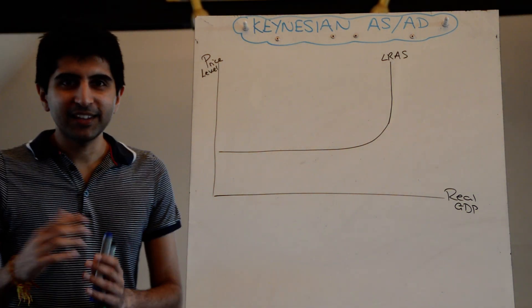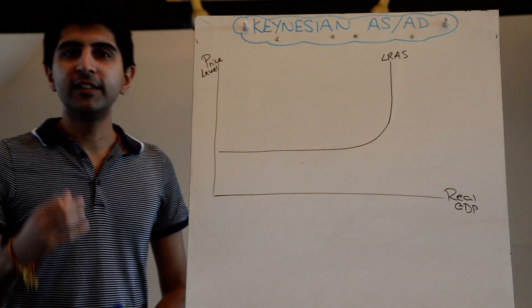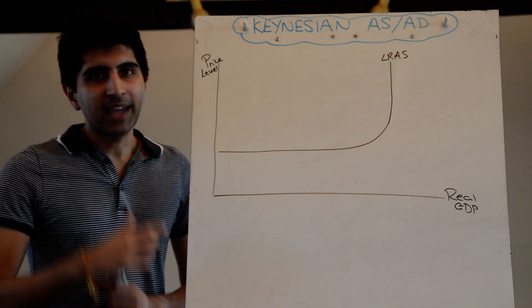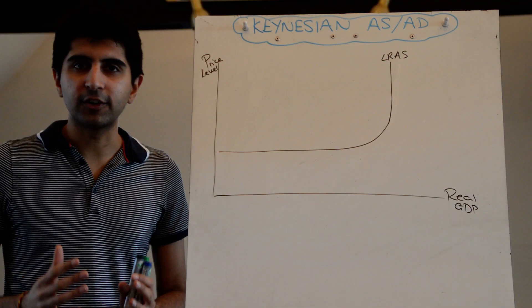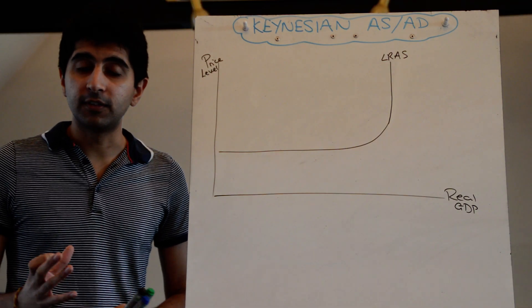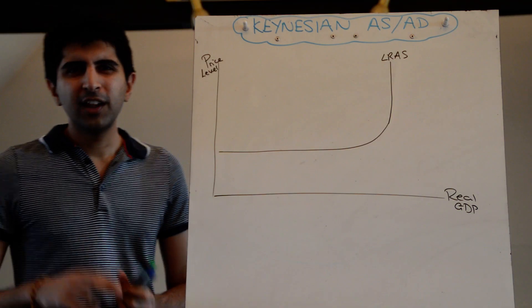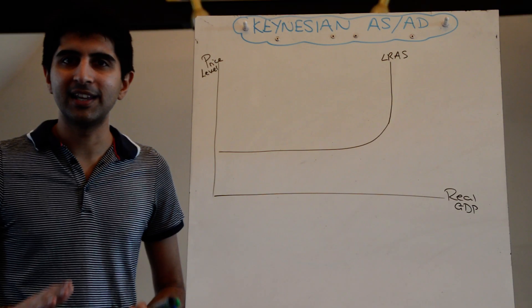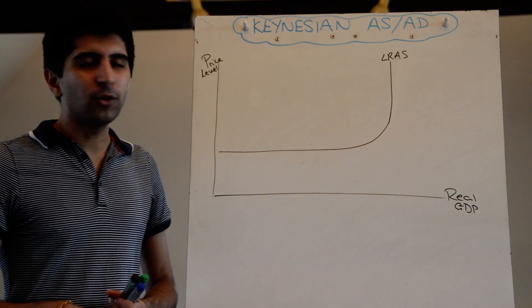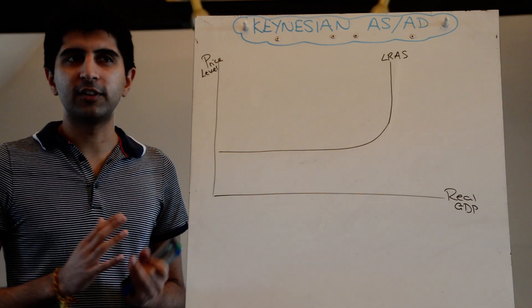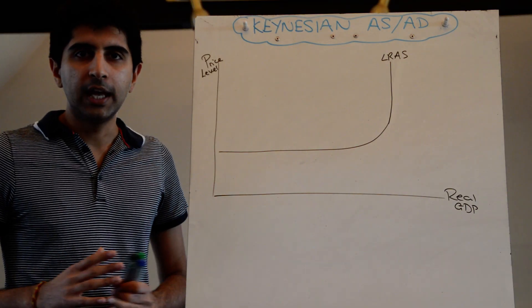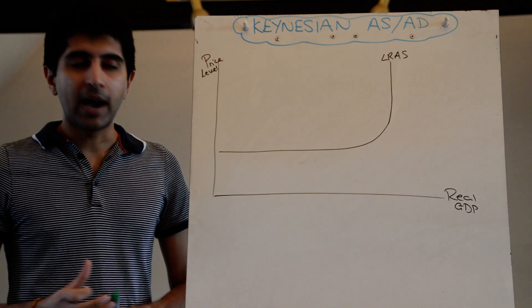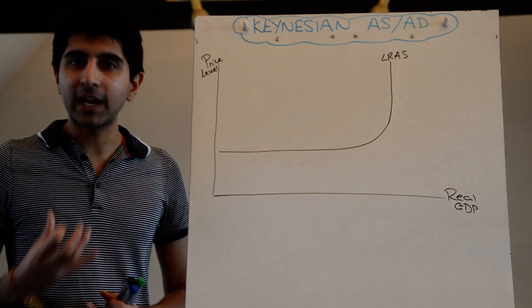Hi everyone, let's now compare the classical model to the Keynesian model of aggregate demand and aggregate supply. Keynes fundamentally disagreed with the classical model and its assumptions, especially the whole short run versus long run difference. He called the assumption of wages being flexible in the long term a crazy assumption.